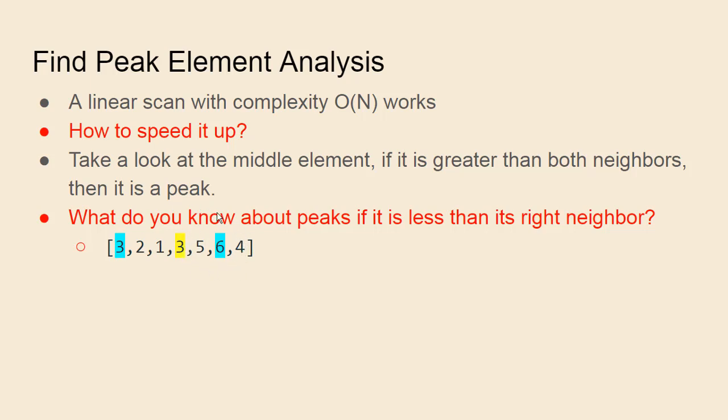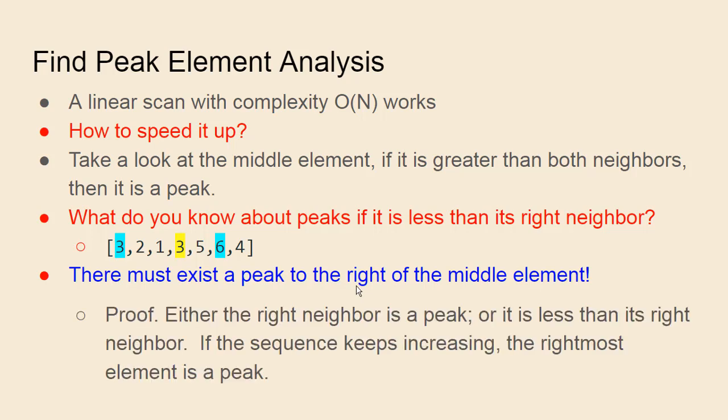There may still be peak elements to the left, but on the right side, there must exist one peak element. I encourage you to try to come up with the proof for that. It's fairly straightforward. Okay, so here's the proof.